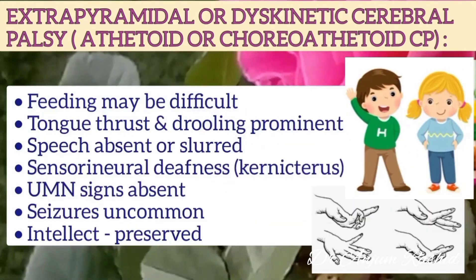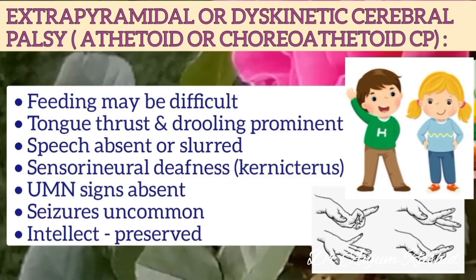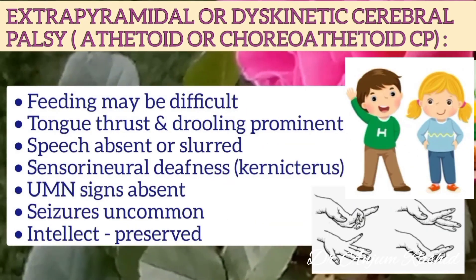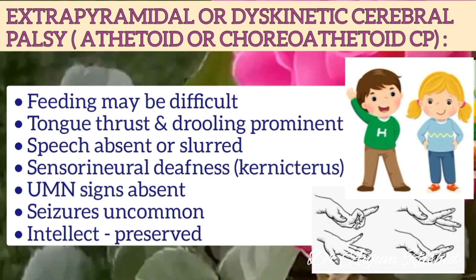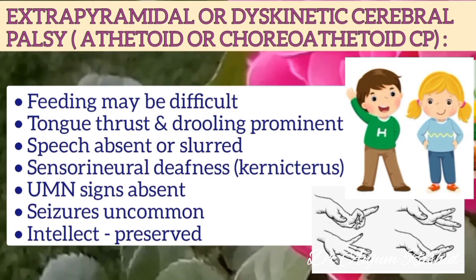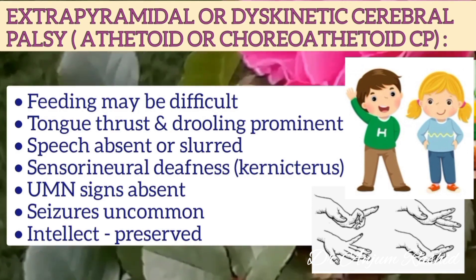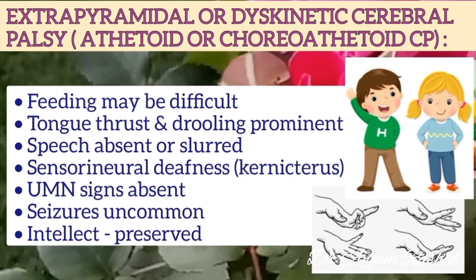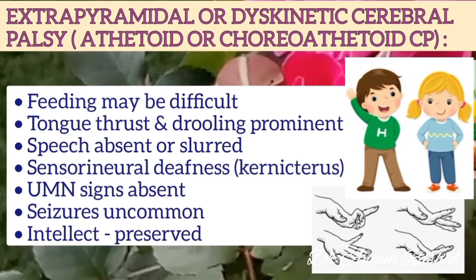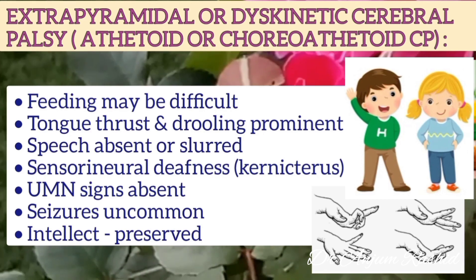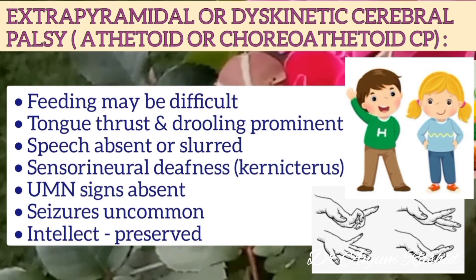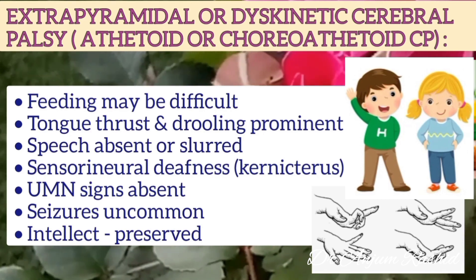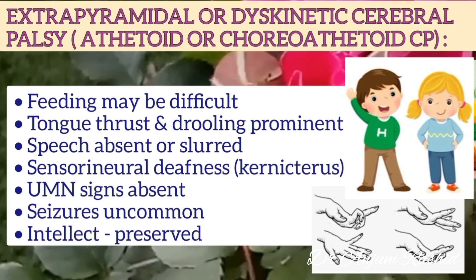In extrapyramidal cerebral palsy, feeding may be difficult, tongue thrust or drooling is prominent, speech may be absent or slurred, and there is sensorineural deafness. However, upper motor neuron signs are absent, seizures are uncommon, and intellect is usually preserved.